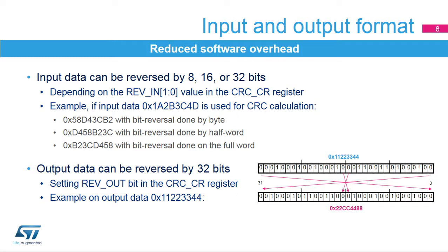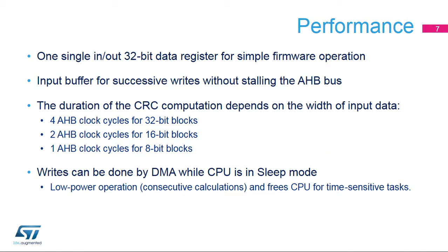The operation is done at bit level. For example, output data 0x11223344 is converted into 0x22CC4488. The CRC data register includes an output buffer, which allows for immediate writes by the CPU or DMA peripheral of a second data word, without waiting for any wait states due to an active CRC computation. The CRC data register can be accessed by word, right-aligned half-word, and right-aligned byte. The duration of the computation depends on the data width.